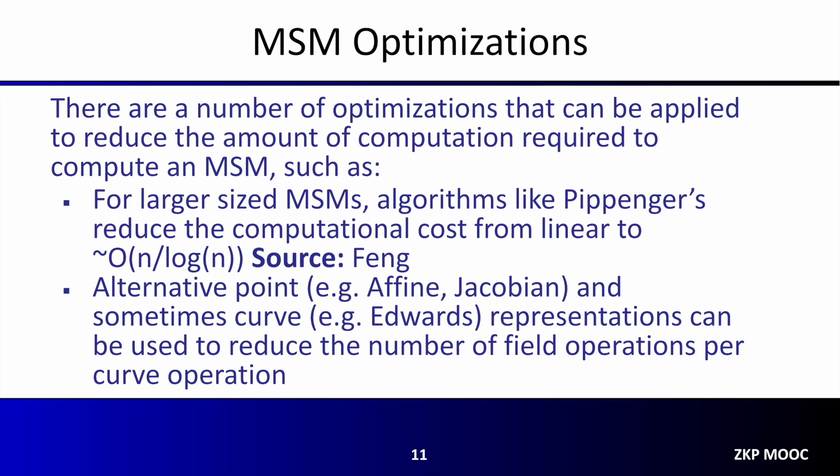There are a number of optimizations that can be applied to reduce the amount of computation in an MSM. For larger-sized MSMs, algorithms like Pippenger's reduce the computational cost from linear in the amount of bases and scalars to roughly O(n / log n). In addition to improved algorithms, there are also alternative point and curve representations that can reduce the total number of field operations per curve operation.